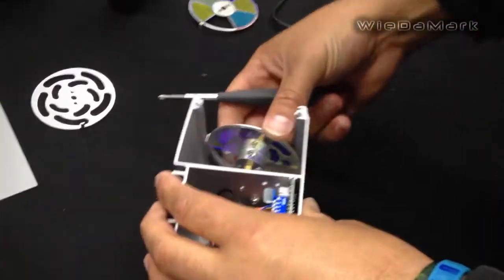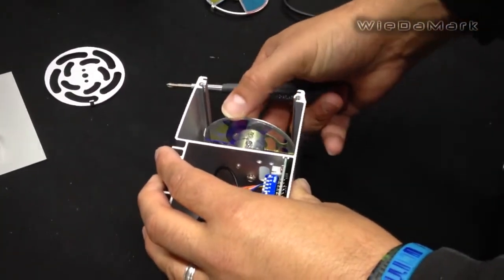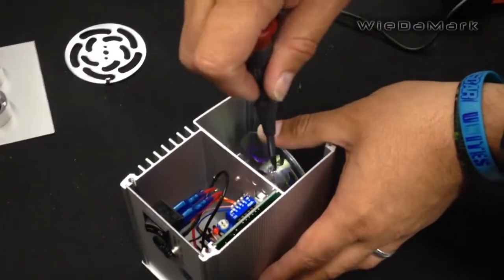Then you'll pop the wheel back on there. Set the set screws.